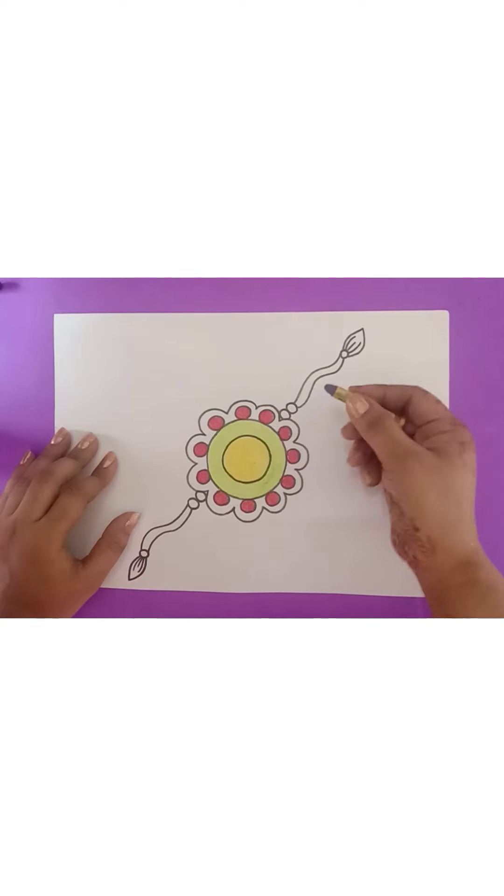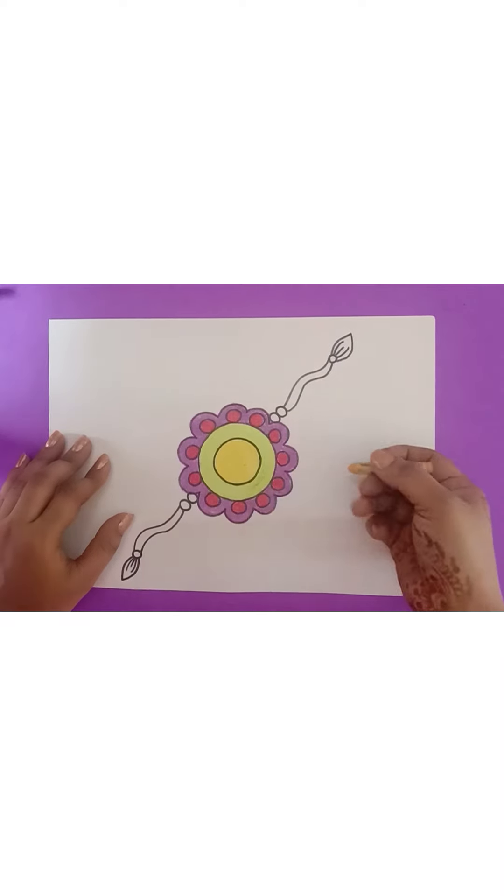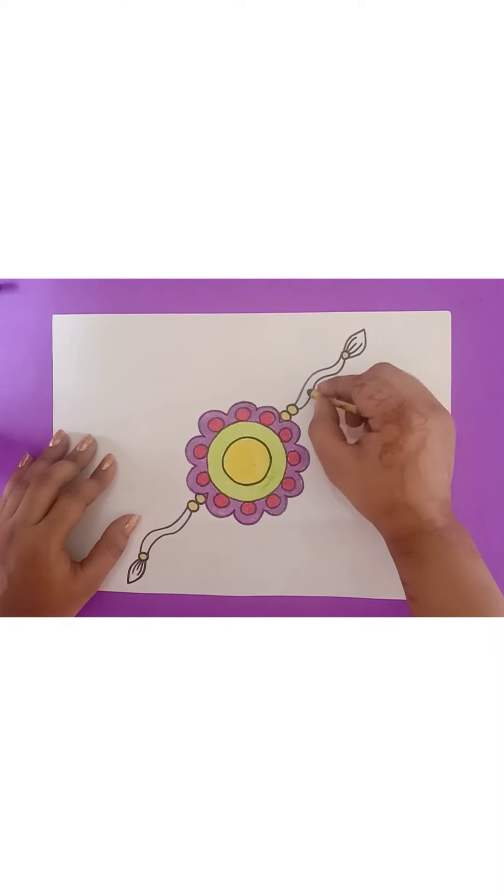Now, take purple color. Done. Now, again, take this yellow and here in small circles we will do the yellow color. Now write dark green, dark green in thread.